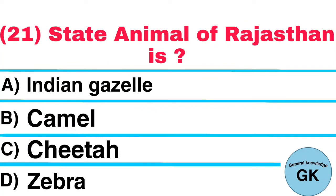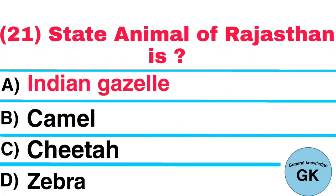Question Number 21. State Animal of Rajasthan is: A. Indian Gazelle, B. Camel, C. Cheetah, D. Zebra. Answer: Indian Gazelle.